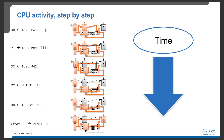The next instruction is multiplication. In this case, the values from registers R1 and R2 are fed into the ALU to perform the multiplication. The product of these two numbers is put into register R2. During execution of this instruction, the load unit, store unit, and addition unit are all idle.